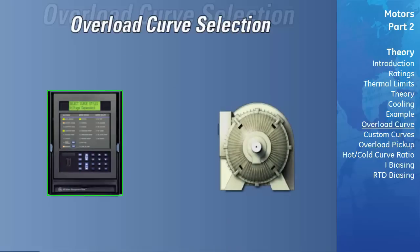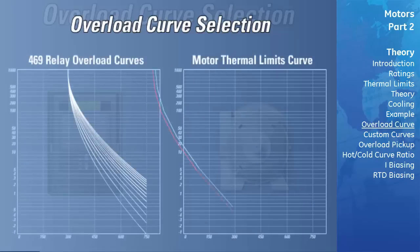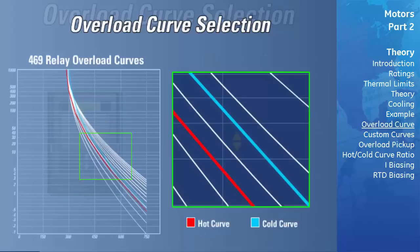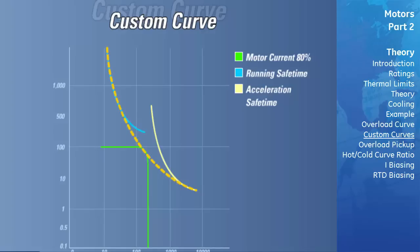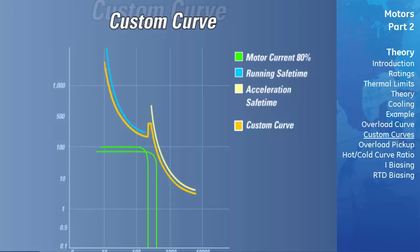Modern digital relays have multiple standard overload curves which can be chosen to provide accurate protection. In selecting a curve, the engineer overlays the standard curves to determine the best fit. The overload curve should be chosen such that it is just below the cold thermal limit and above the hot thermal limit. With the hot-cold curve ratio programmed correctly, the overload curves are automatically adjusted whether the motor is hot or cold. A custom curve feature allows the user to tailor the relay's thermal damage curve to the motor, enabling a successful start without compromising protection, by entering trip times for 30 predetermined current levels.